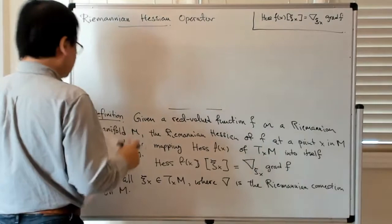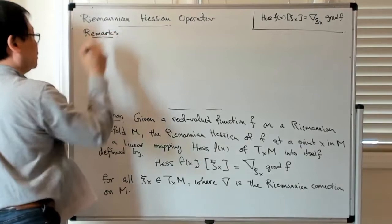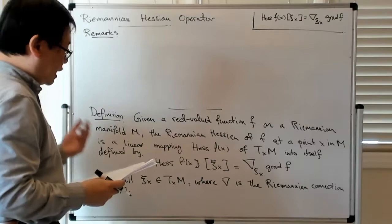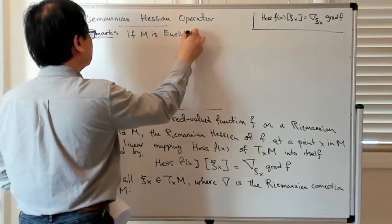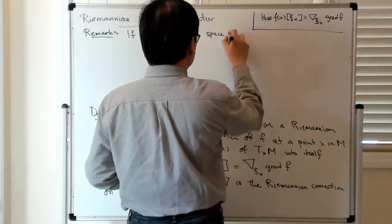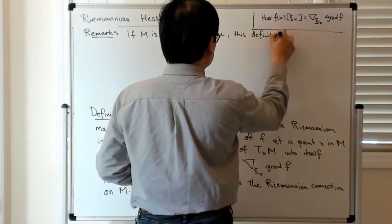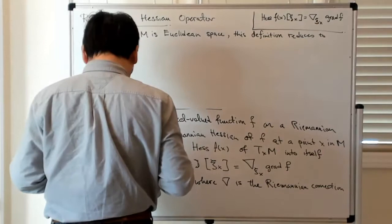So let's make some remarks about how this relates to the usual notion of the Hessian in RN just to at least allow us to say that it generalizes that specific case. So if M is Euclidean space, then this definition reduces to the usual one,